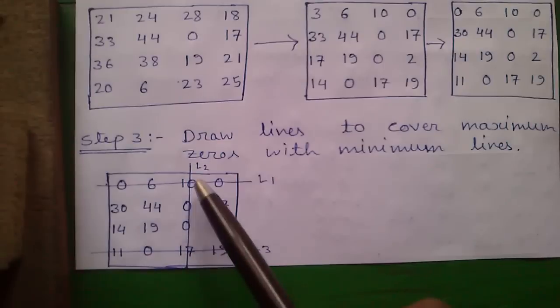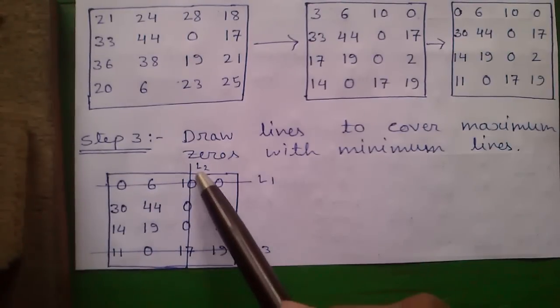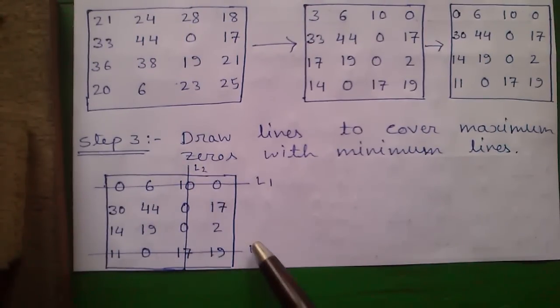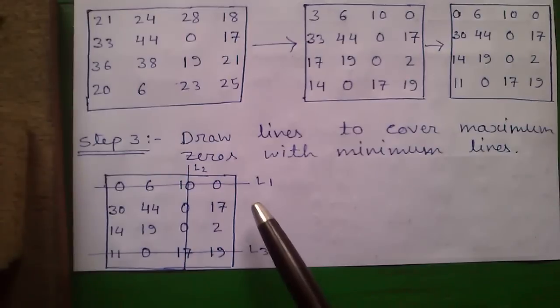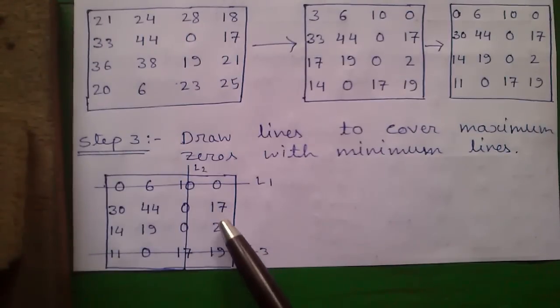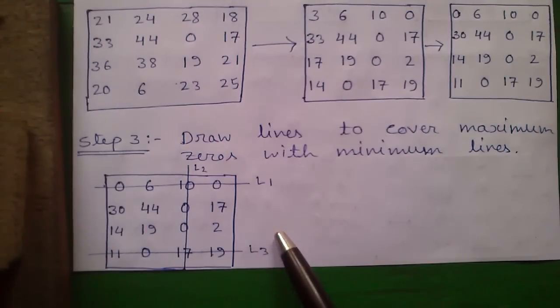Third column has 2 zeros, so that is our L2. And in 4th row we have 1 zero left, so that is our L3. If there are same numbers of zeros everywhere, you can start drawing lines arbitrarily. We have covered all the zeros with minimum possible lines. The drawing line step is complete.